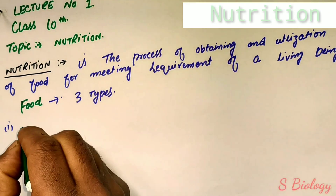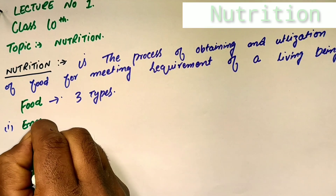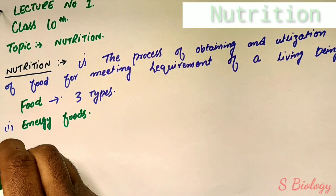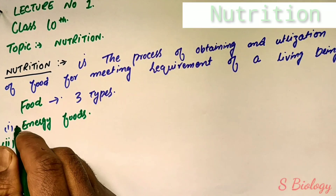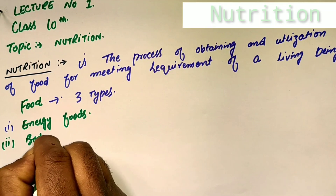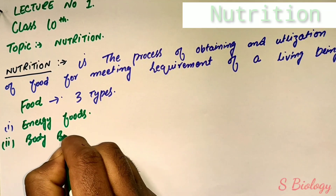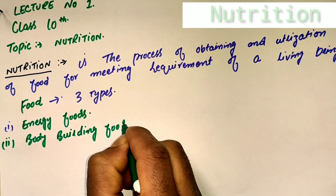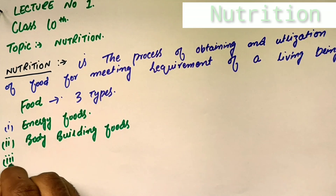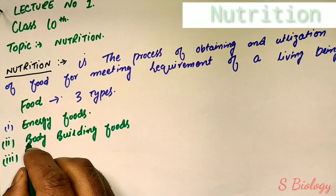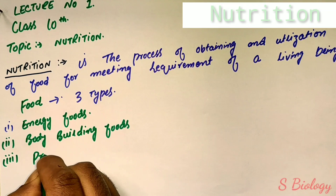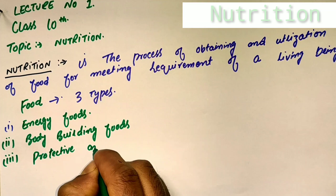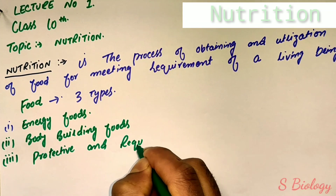There are three types of foods. Number one: energy foods, which include carbohydrates and fats. Number two: body-building foods, for example proteins, minerals, and carbohydrates. Number three: protective or regulatory foods, for example vitamins and minerals.